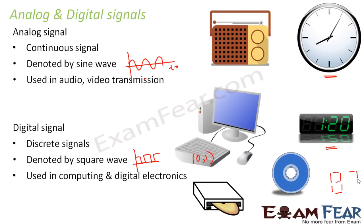In a digital clock display, if you want a zero, all segments should be high except the middle one. If you want a three, all segments should be high except the two left-side ones. If you want a two, all segments except the top-left and bottom-left are high. This illustrates the discrete, high-or-low nature of digital signals.